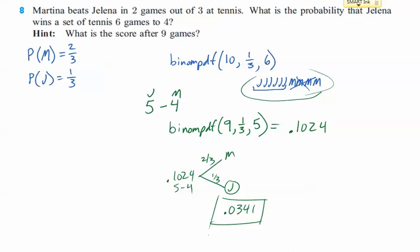And there you go. That is the answer to the probability that Jelena will win a set of tennis exactly six games to four. All right. There you go. See you in class.